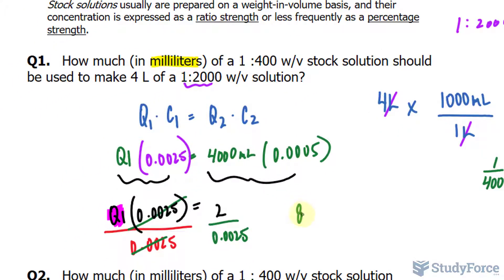Now we take the value on our screen divided by 0.0025, and that makes 800. So we need 800 milliliters of a stock solution at this specific strength to make 4 liters of a diluted solution that has this strength.